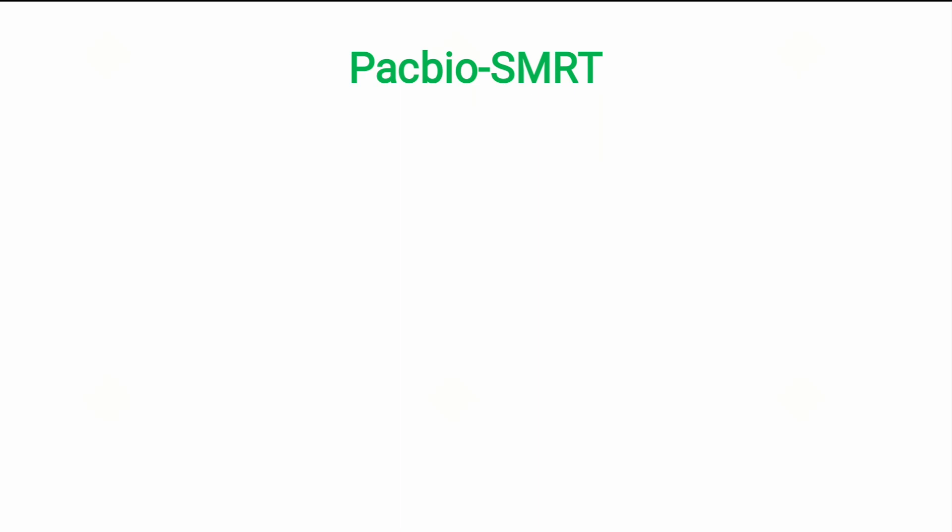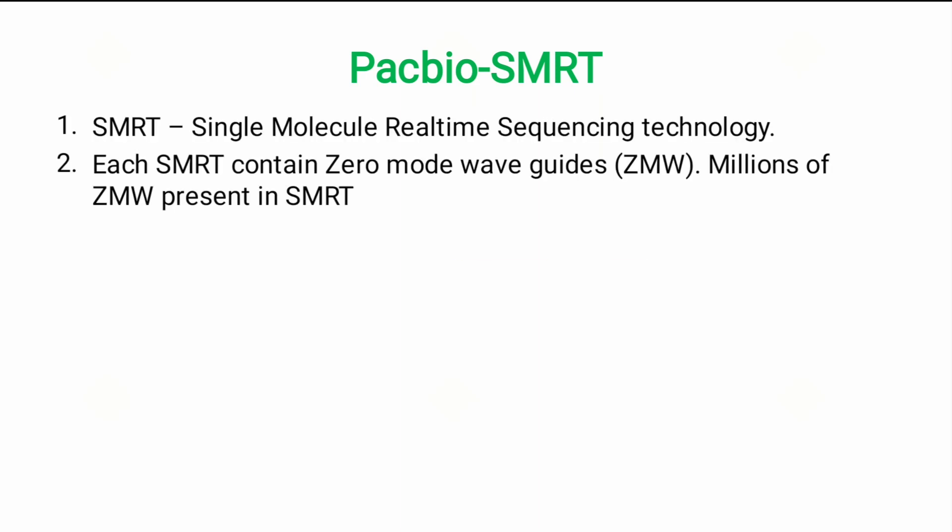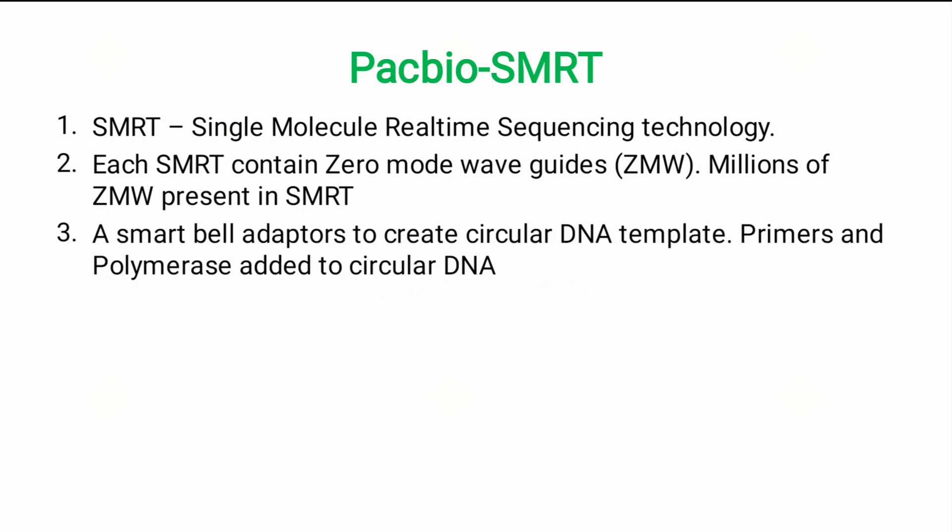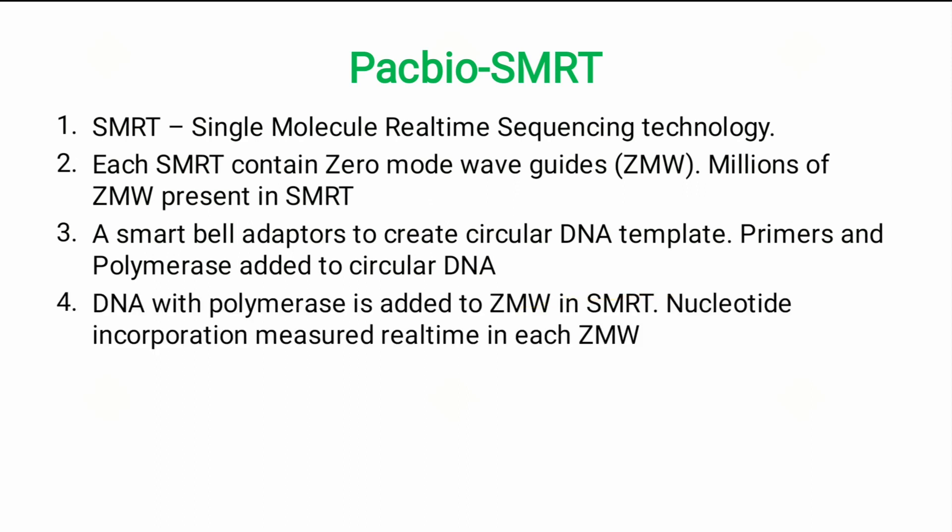First, we will see about PacBio SMRT. SMRT stands for Single Molecule Real-Time sequencing technology. Each SMRT cell contains Zero Mode Waveguides, called ZMWs, with millions of ZMWs present per SMRT cell. SMRTbell adapters are used to create a circular DNA template, and then primers and polymerase are added to the circular DNA. The DNA with polymerases is then loaded into the Zero Mode Waveguides.